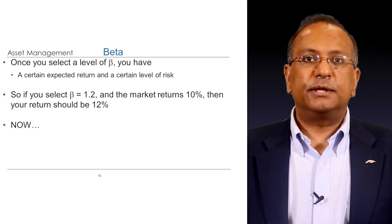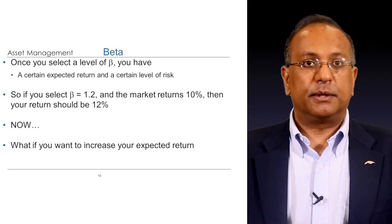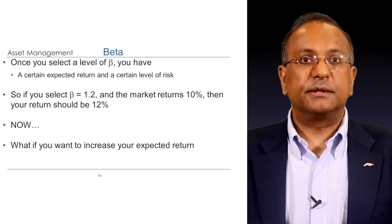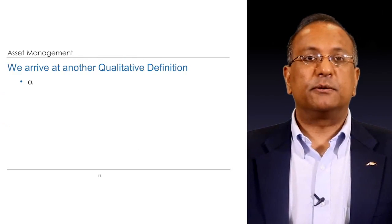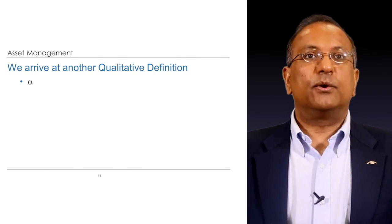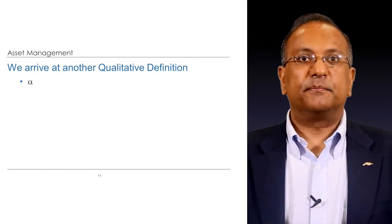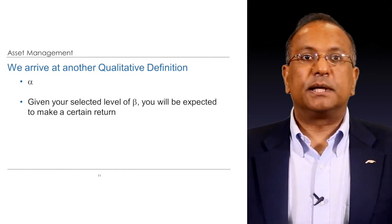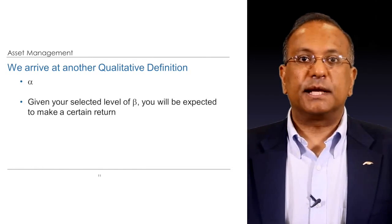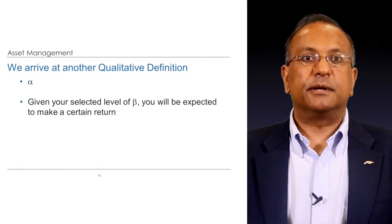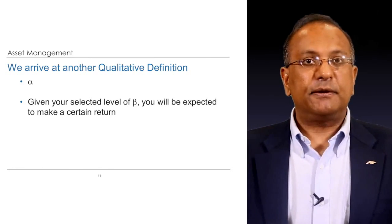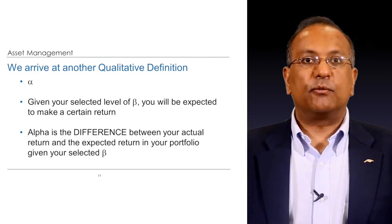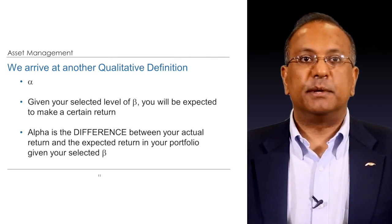Now, what if you want to increase your expected return but keep your risk unchanged? Or what if you want to decrease your risk but keep your expected return unchanged? Now we go to the concept of alpha. A qualitative definition of alpha: given your selected level of beta, you will be expected to make a certain return. Alpha is the difference between your actual return and the expected return in your portfolio given your selected beta.